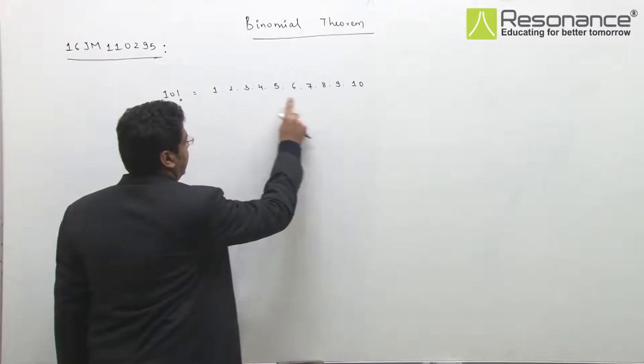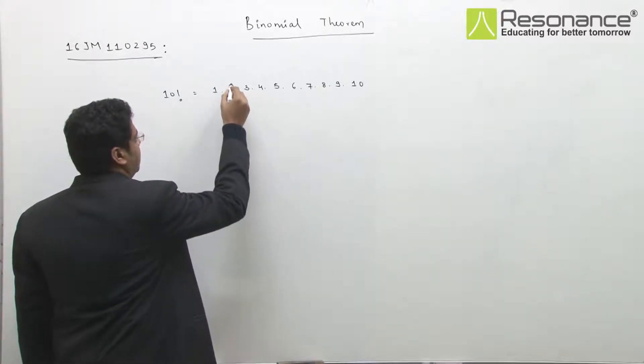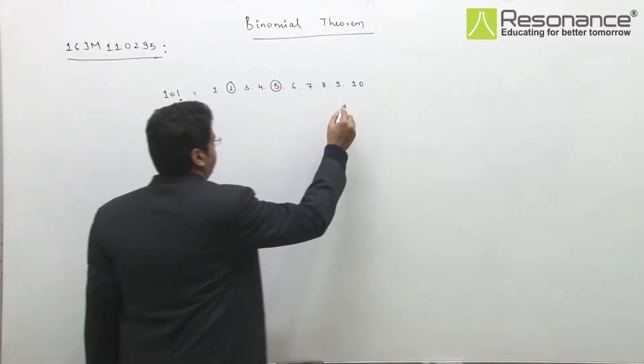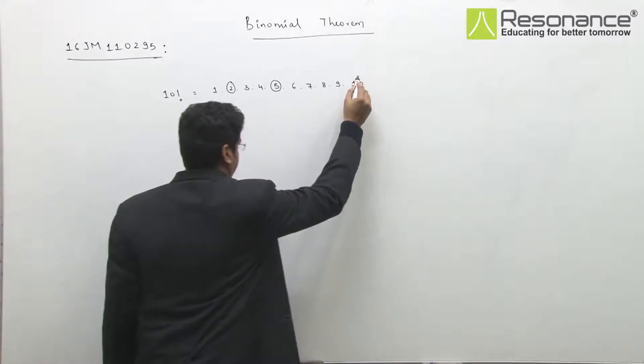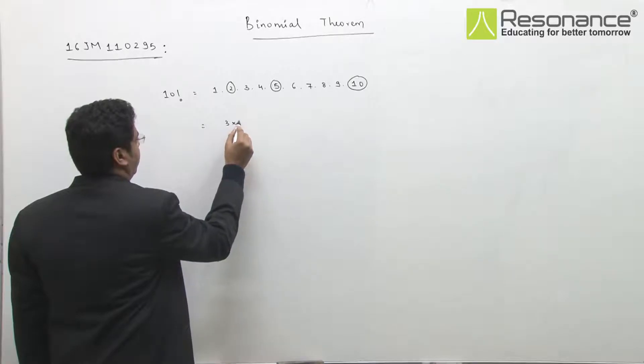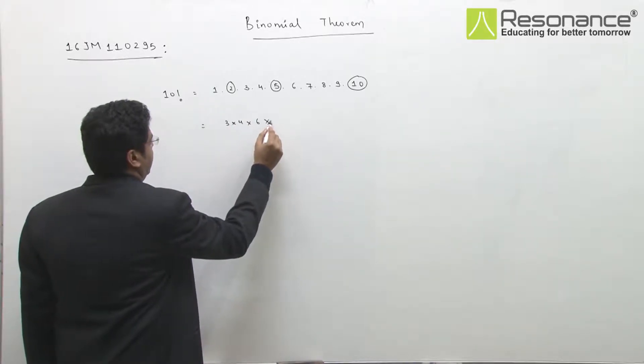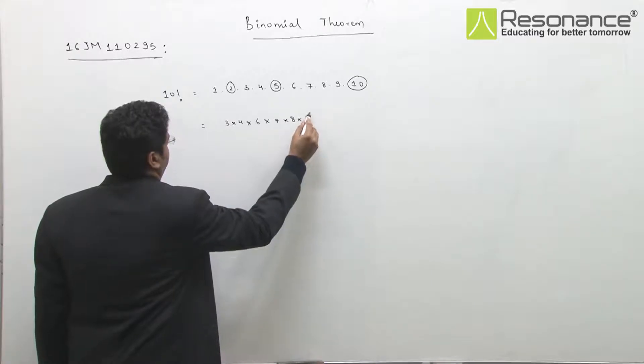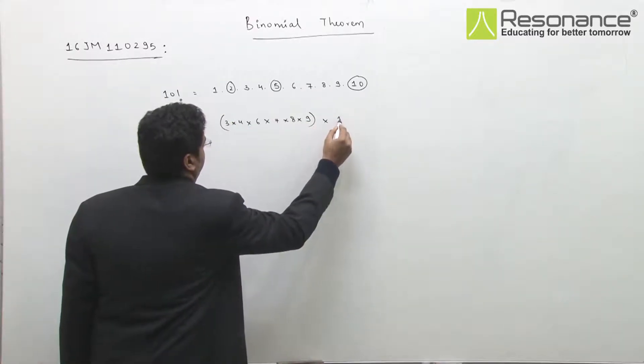Look, I have written a multiplication from 1 to 10. And 2 and 5, when we combine, we will make 10 into 10. So I can write this as 3 into 4 into 6 into 7 into 8 into 9 into 100.